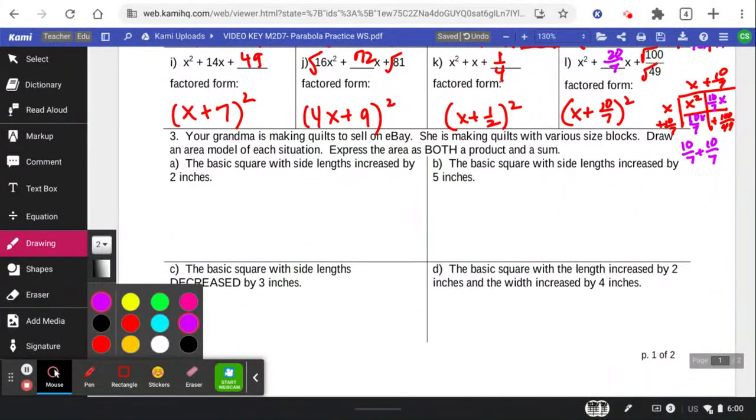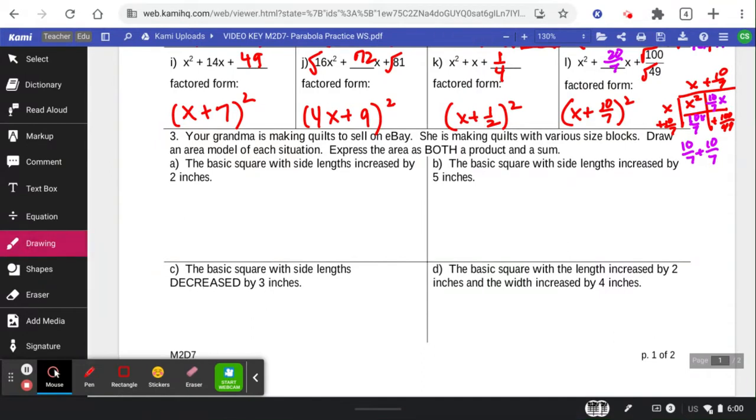Down to the bottom section. Grandma is going to make quilts to sell on eBay. She's making quilts with various size blocks. Draw an area model for each situation and express as a product and a sum. So the basic square of x by x extended by 2 inches.